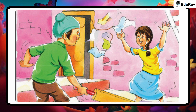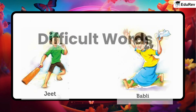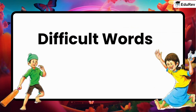Bubbly jumped and caught a piece of rag. She jumped and shouted, 'Out, out!' In this story, we were able to see how Jeet and Bubbly were able to play even after their ball was lost.